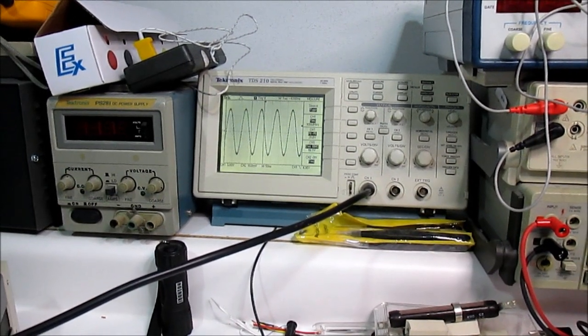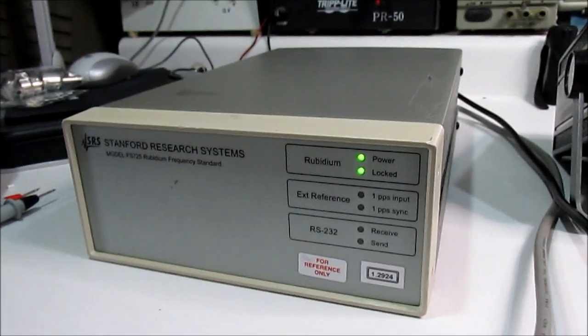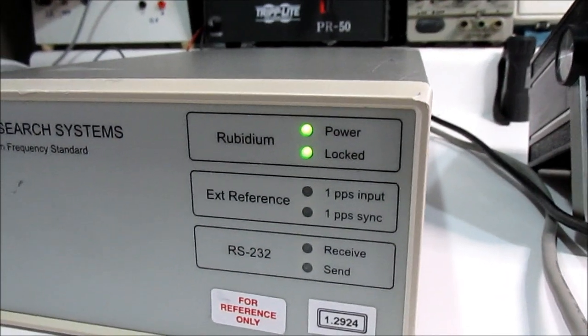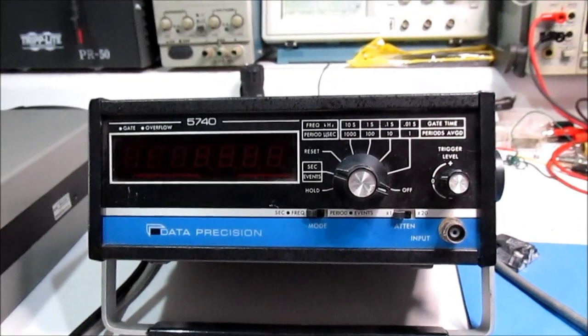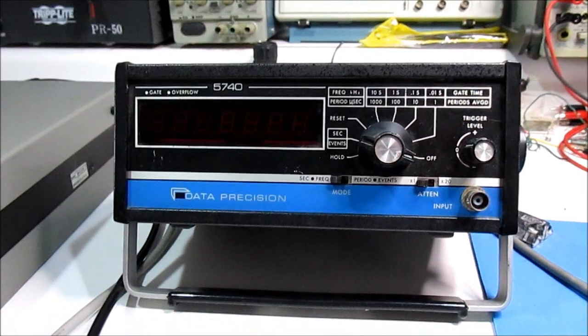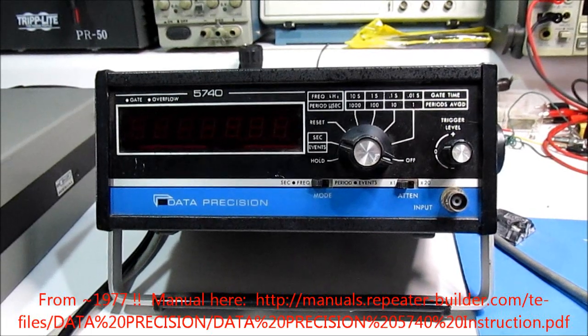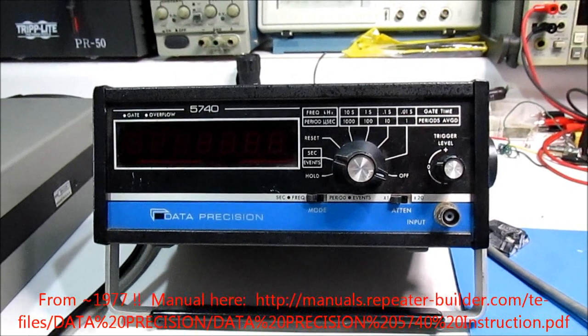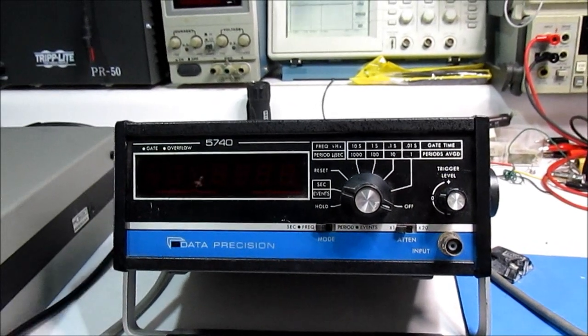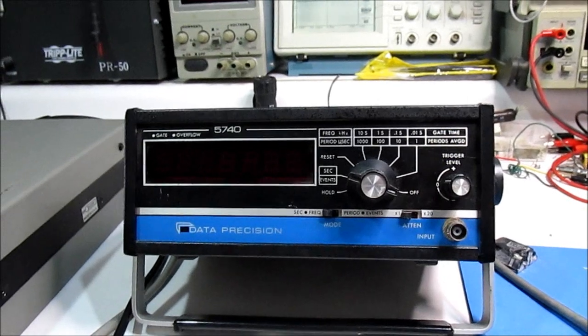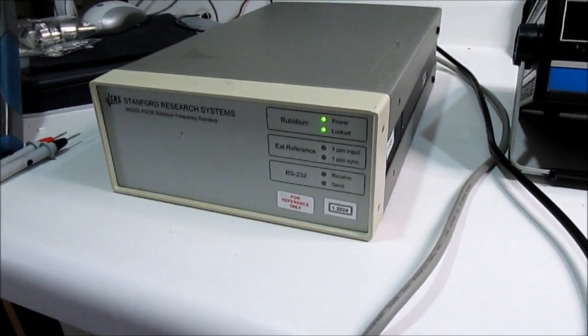All right, so when I dug up the frequency counter in the meantime I see that the locked LED has now come on. All right, so we have this, I think it's like a late 70s era, maybe early 80s Data Precision 5740 frequency counter that I've had in my collection for a while. Doesn't really get any use, but we'll see what it's telling us about the rubidium frequency counter. So let's hook this up.